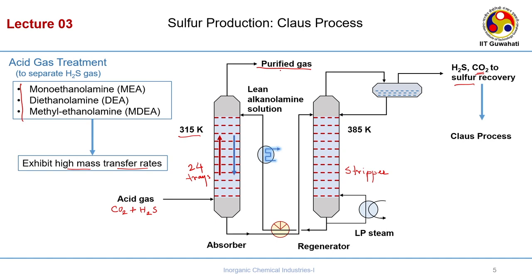Most of the CO2 passes out through the purified gas, and the H2S gas is sent to the Claus process. When stripped by steam in the regenerator, the lean alkaline amine solution, after giving away heat, is sent back to the absorber. The absorber and regenerator operate cyclically — one cycle absorption, the next regeneration — moving to and fro. This is how you treat the acid gas and remove H2S and CO2.